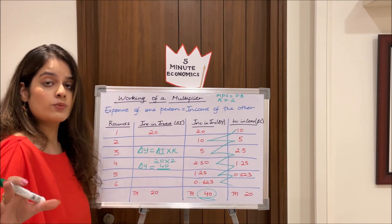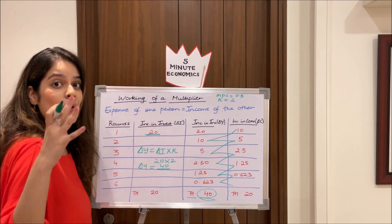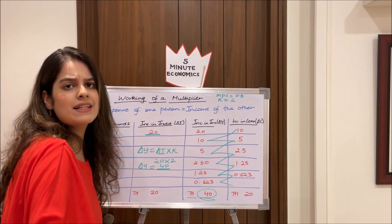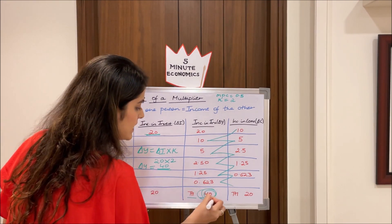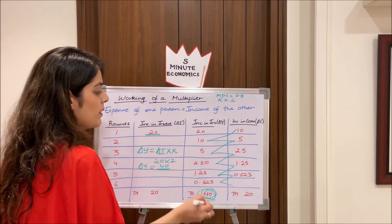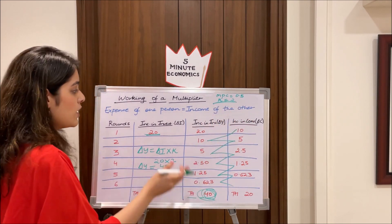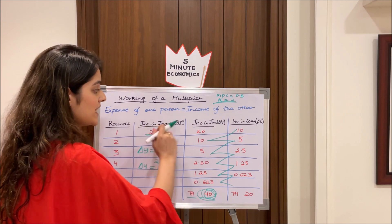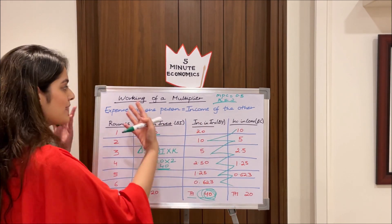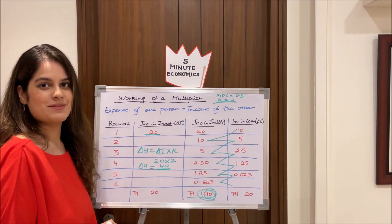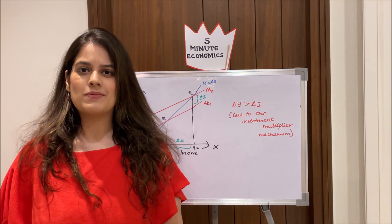Notice that we started with an investment of 20 crores, but income increased by 40 crores — double. This is because the value of k was 2. With an increase in investment, our income increases multiplier times, thanks to the multiplier mechanism.